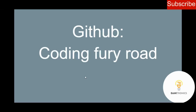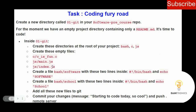Welcome to this channel. In this video I'll be solving a task titled 'Coding Fury Road.' This is a follow-up of my previous video where I created a readme file, cloned my repository named software-pre-course, and created a readme file in that directory. Now I want to do the following task: the first thing is to create a new directory called zero-one-thinkit inside the software-pre-course repo.